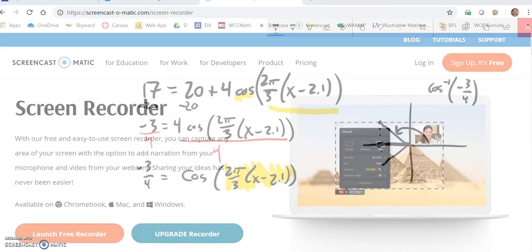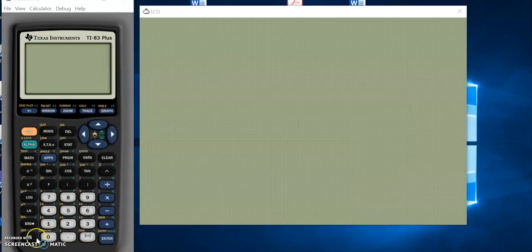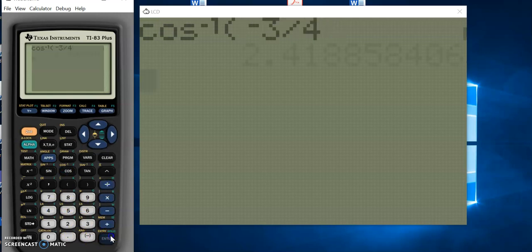Let me do that on my calculator. Turn it on, so inverse cosine negative 3/4.